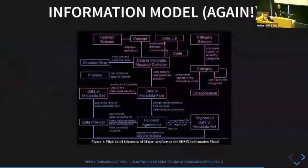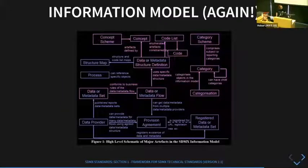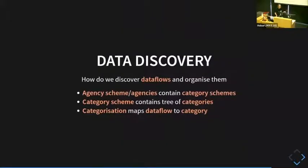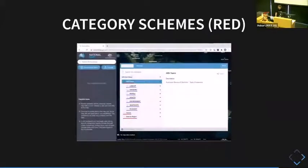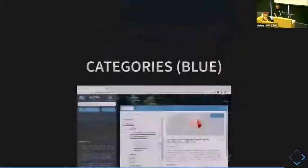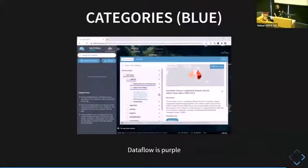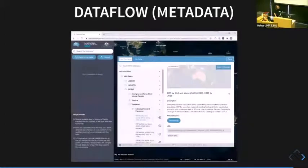I'll quickly go over being able to discover data sets. I've covered the bits of the information model that describe data sets, but as far as organizing them into a tree-like structure that people can search through, there are a few other components of SDMX that help. You've got agencies — for example, ABS would be an agency — and then categories and categorizations, which let you turn data sets into a tree-like structure. For example, you've got ABS topics, census data by region as category schemes, and then categorizations underneath. We also get a little bit of data flow metadata — a description, a link to methodology, and you can obviously export the data too.